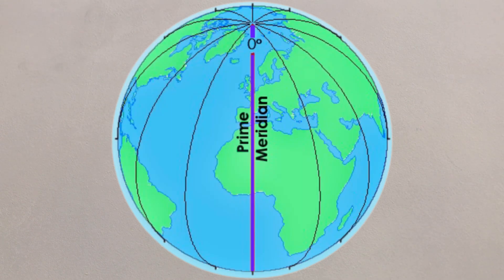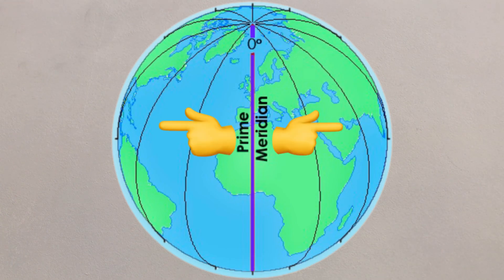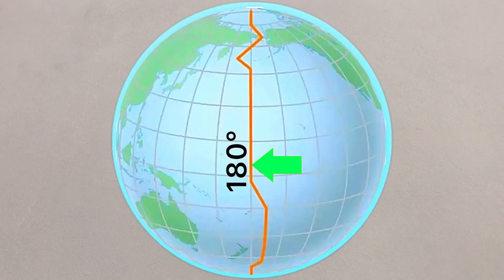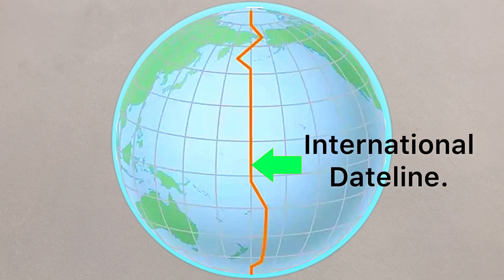Lines of longitude are measured east and west of this point, until they reach 180 degrees. This is the approximate location of the international dateline, where days start.